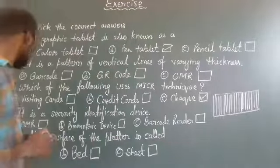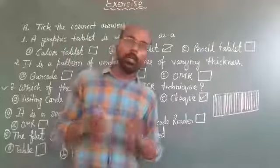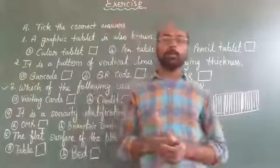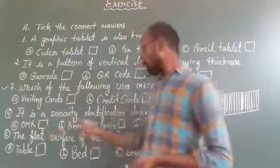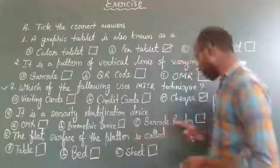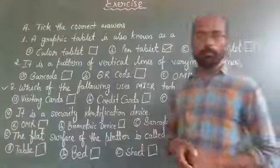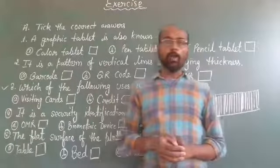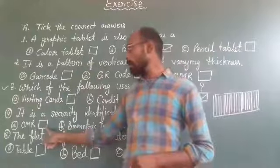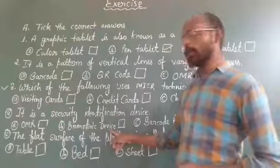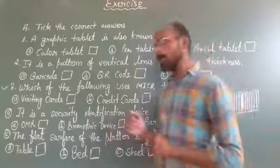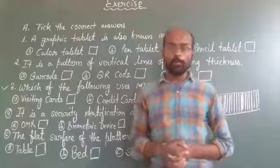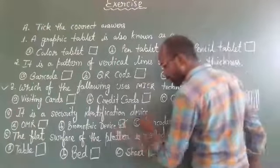Question number 4 is: it is a security identification device. Option A is OMR, option B is biometric device, and option C is barcode reader. If you are choosing option B, then your answer is right. Biometric device is a security identification device.